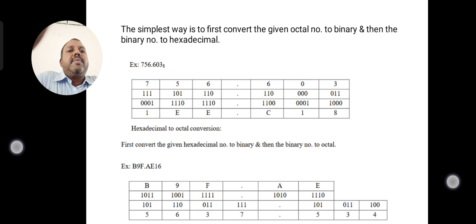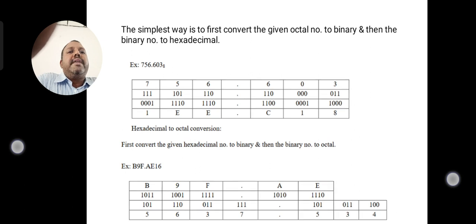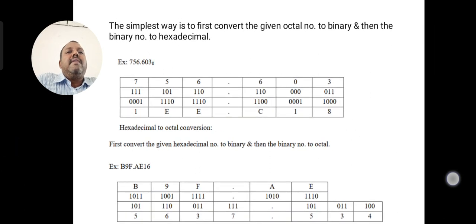The next example is hexadecimal to octal conversion. First, the hexadecimal number is converted to binary, and then binary to octal — making it very easy to find the equivalent value. The hexadecimal numbers in the example are 1, 2, 5, and 3.